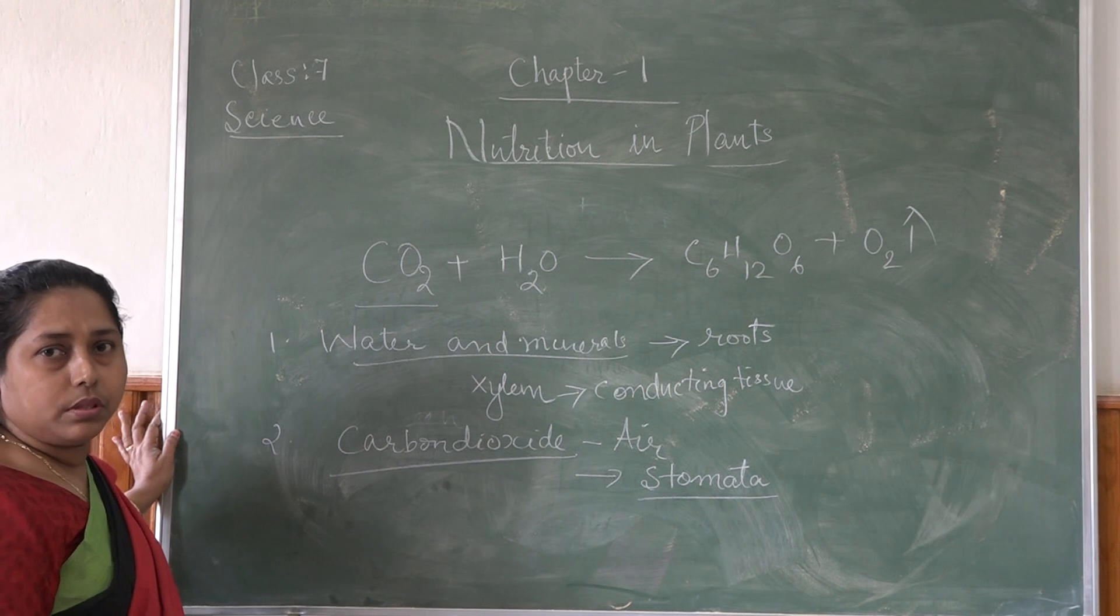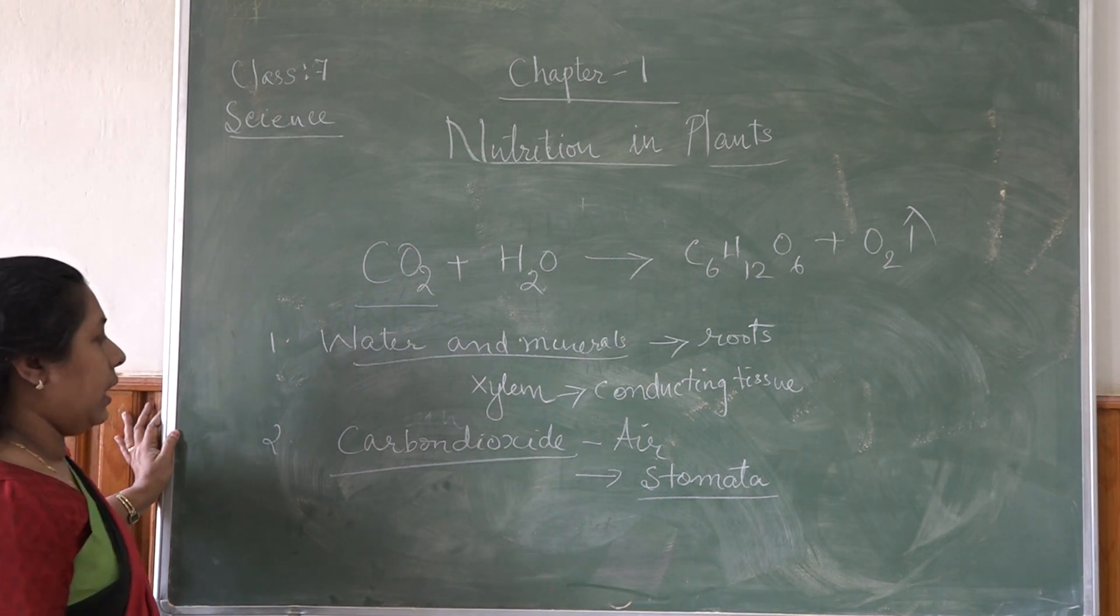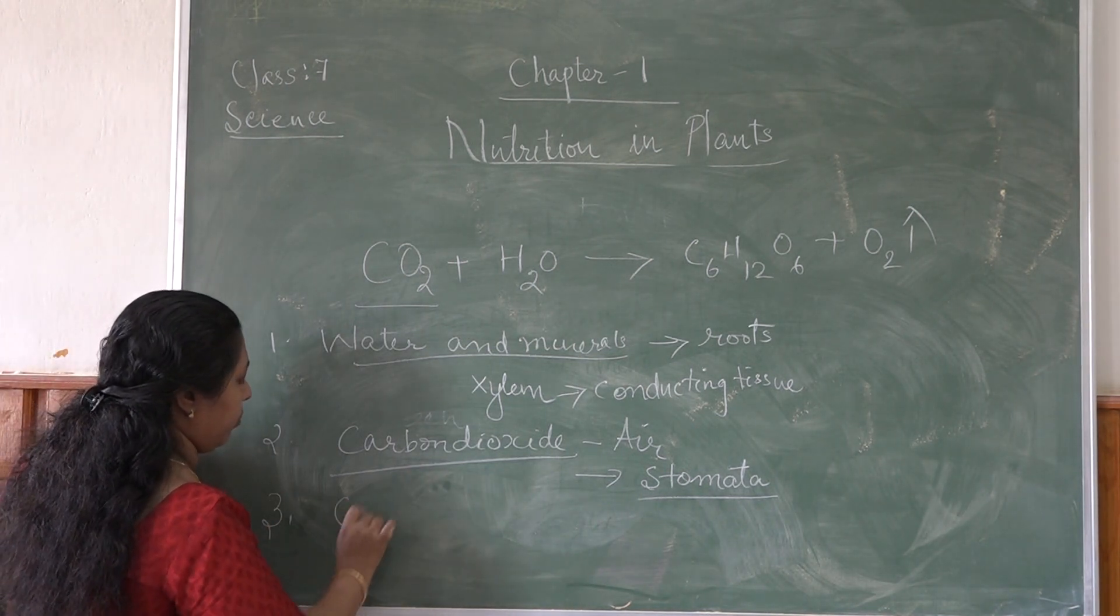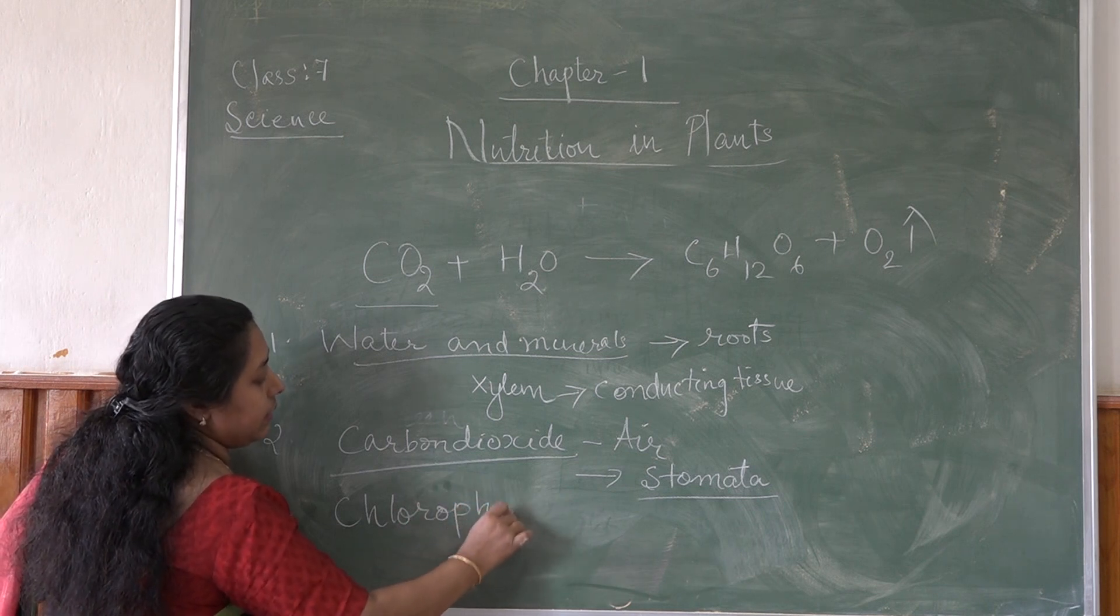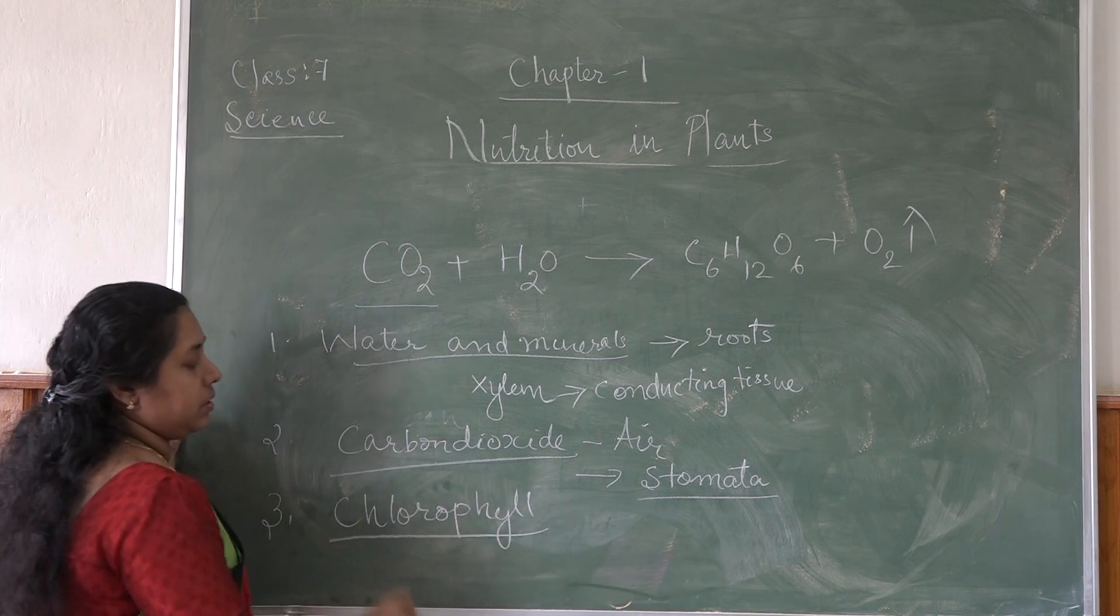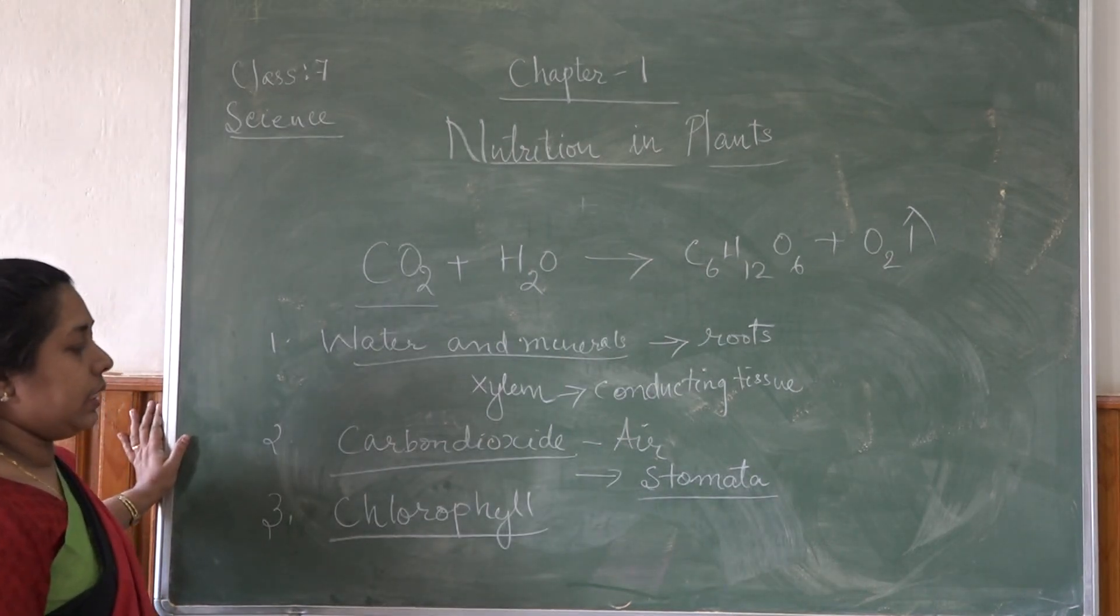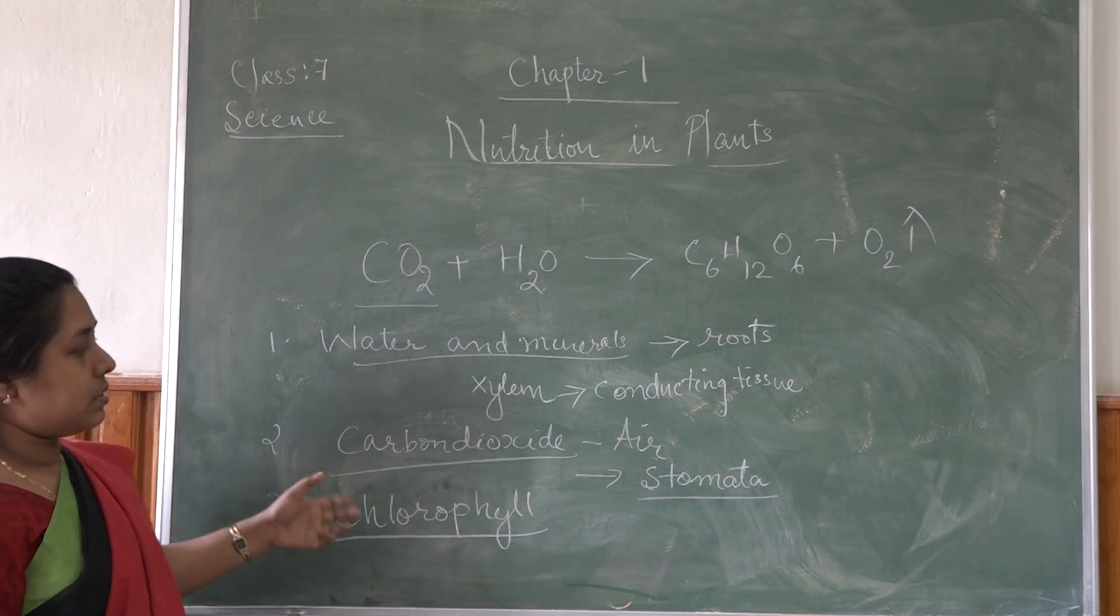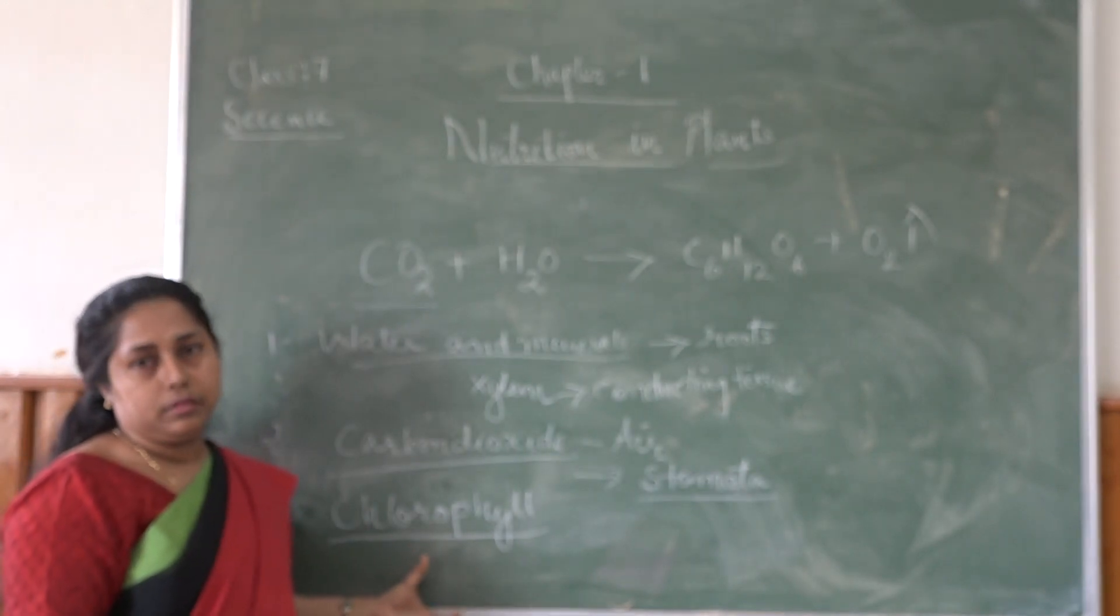So carbon dioxide enters through the stomata and reaches the leaves. And third one, the material required is chlorophyll. Chlorophyll is the green pigment which is present in the chloroplast of the plants. With the help of this green pigment, they can capture sunlight and carbon dioxide and prepare their food.